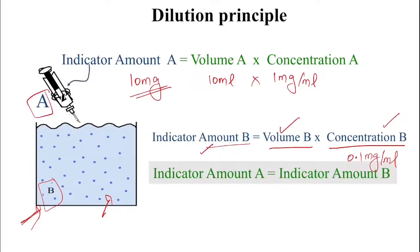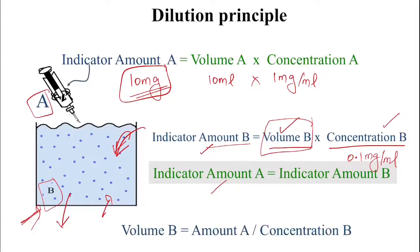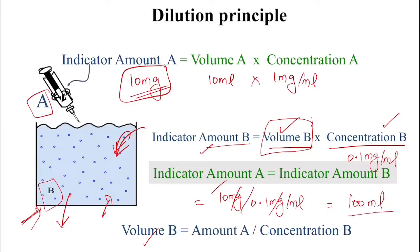The indicator amount in B equals the indicator amount injected because the dye has not gone anywhere — it stays within this compartment only, so the total 10 milligrams remains in compartment B. Volume B equals the total amount injected (10 mg) divided by the final concentration achieved (0.1 mg/ml), giving a volume of 100 ml. This is the volume of the compartment, and this is the broad principle used for measuring all compartment volumes.